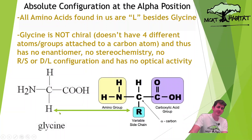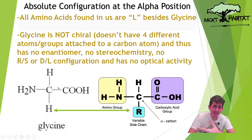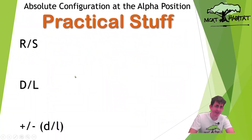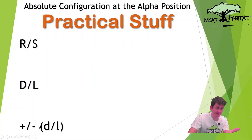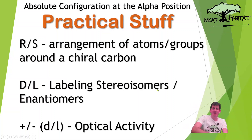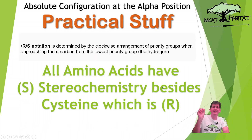Glycine's R group is H, so it already has two H's among its four groups — it is an achiral molecule, an achiral amino acid. Every other amino acid will be chiral. So for practical stuff: absolute configuration. What kind of configurations are we talking about? R and S — the arrangement of atoms or groups around the chiral carbon. D and L — used to label enantiomers. And plus or minus, also referred to as D for plus or L for minus, used for optical activity. Let's start with R and S.